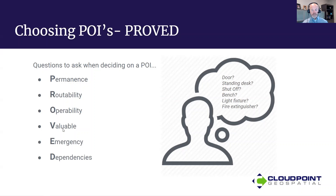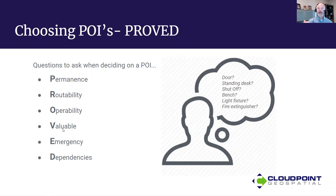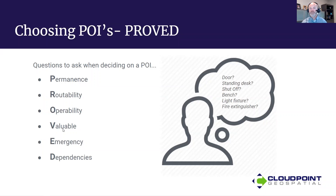O — Operability. Does this item require maintenance? Can it be turned on and off? If it's broken, how important is that? Does it need to be inspected or checked on once in a while? That's an important thing to consider on whether to include it as a point of interest.